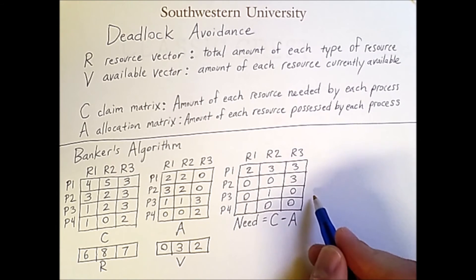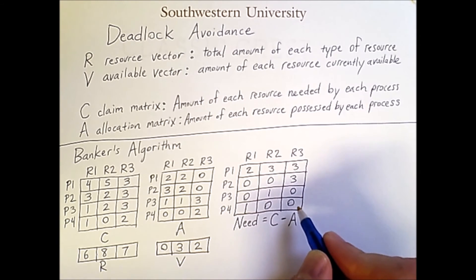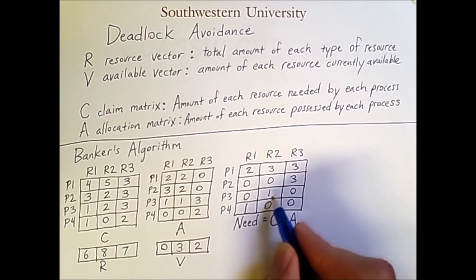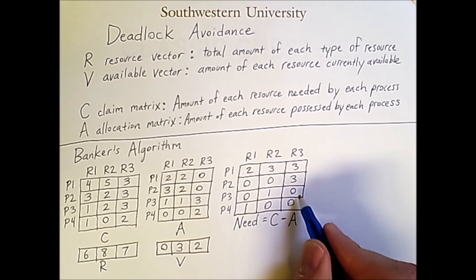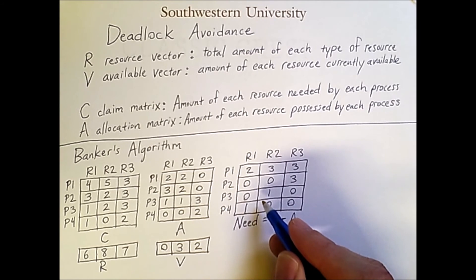Now, row 3 only requires 0, 1, and 0 units of resource types 1, 2, and 3, respectively. And 0 is less than or equal to 0, 1 is less than or equal to 3, and 0 is less than or equal to 2. Therefore, it is safe to run process 3 to completion. And you can confirm on your own that it is not safe to run process 4. So it is not always the case that there will only be one viable option, but in this particular example, the one and only option that is safe to run is process 3.